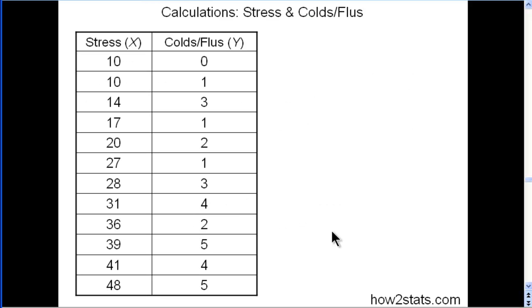Let's look at an example. These are the data from the first scatter plot that I showed. Stress is the X variable, and I've even ordered them, sorted them. These aren't ranks, they're actual stress scores.